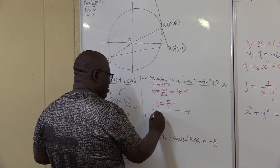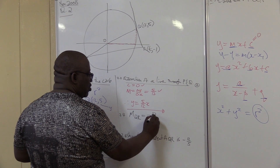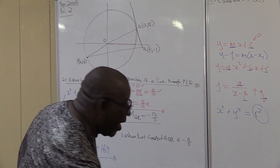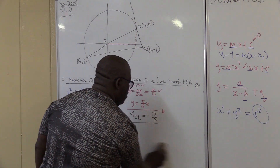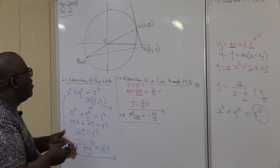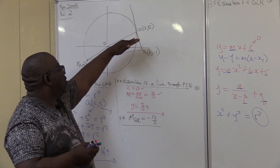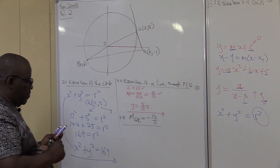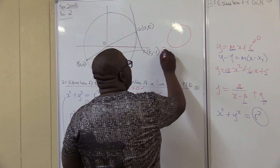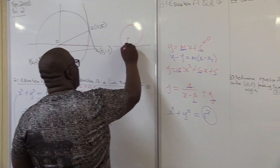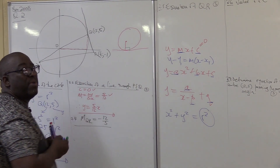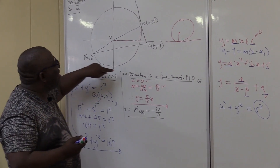Question 2.4: show that the gradient of QR equals −12/5. This is what we need to show. Looking at QR, I can see its gradient is negative. Going to Euclidean geometry — this is the tangent and this is the radius — whenever the radius meets a tangent, 90 degrees is formed. These two lines are always perpendicular.